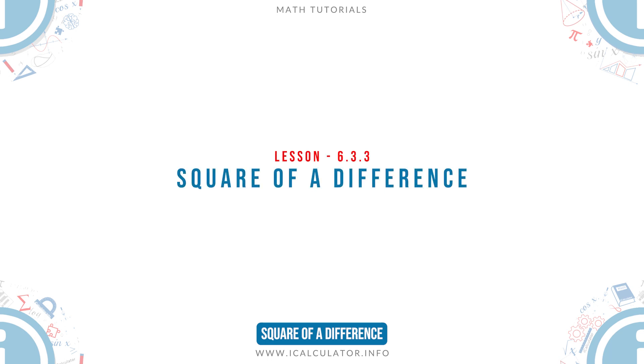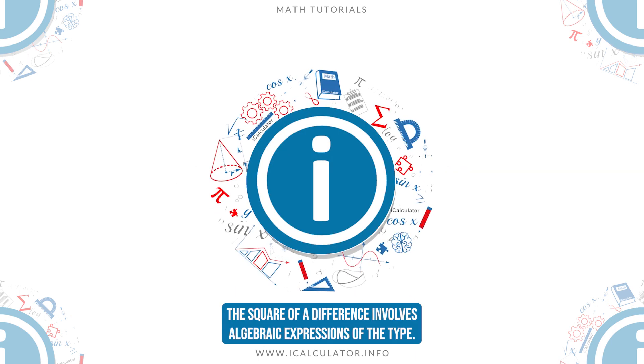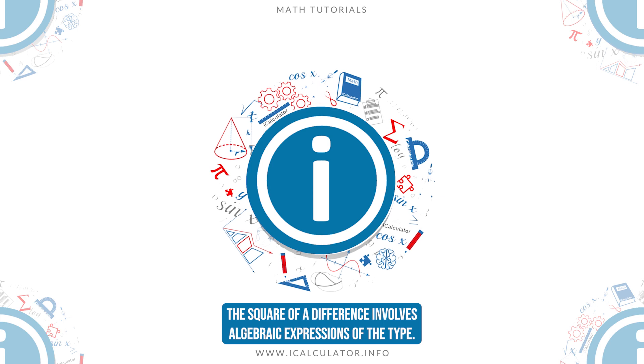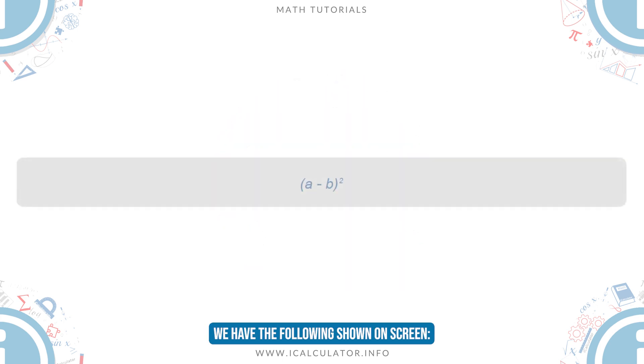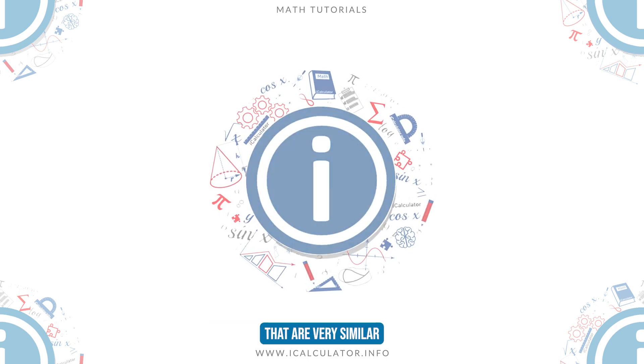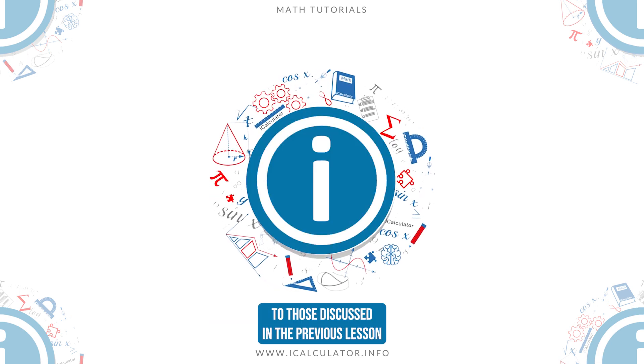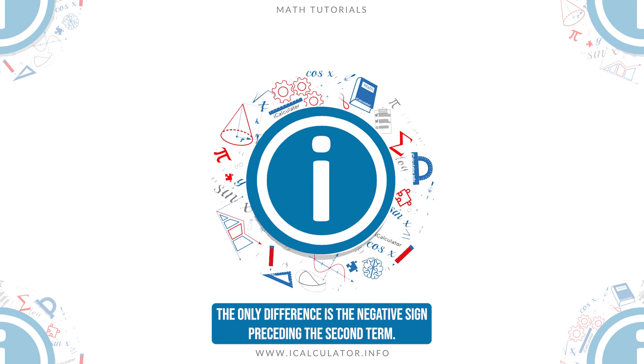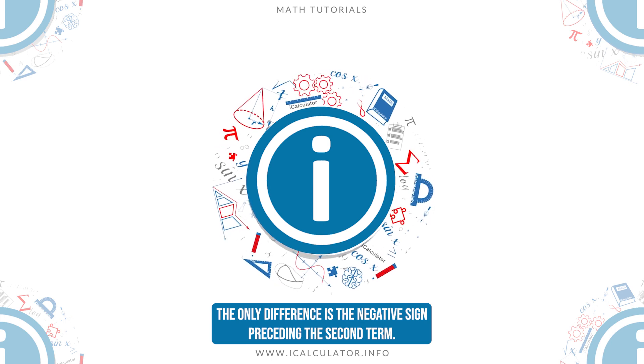Square of a difference. The square of a difference involves algebraic expressions of the type shown on screen, that are very similar to those discussed in the previous lesson. The only difference is the negative sign preceding the second term.